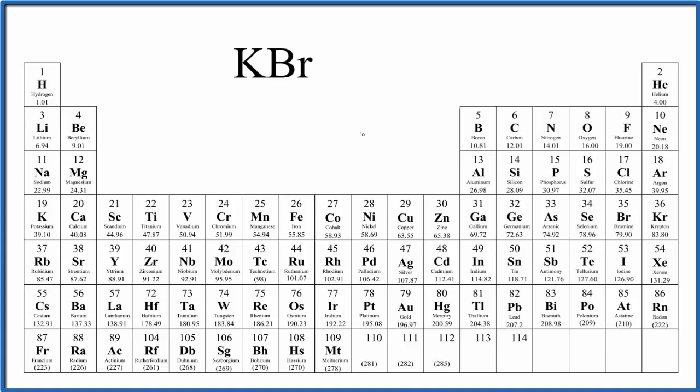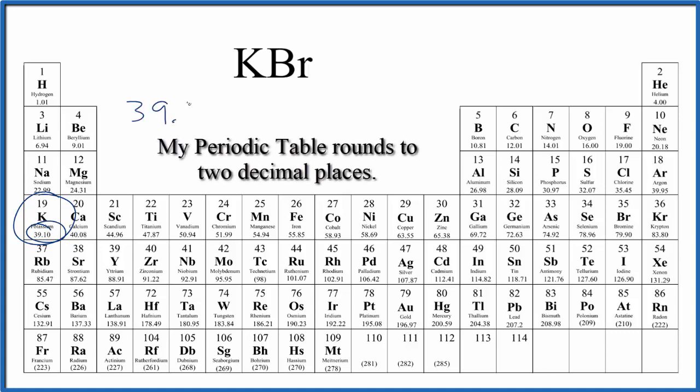So the first thing we'll do when we find molar mass for a compound like KBr, we go to the periodic table, we find potassium. Potassium is right here, 39.10, and the units are grams per mole. I won't write that right now. Let's do that at the end.